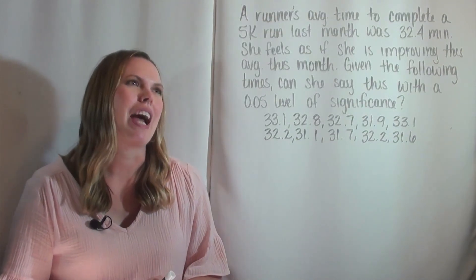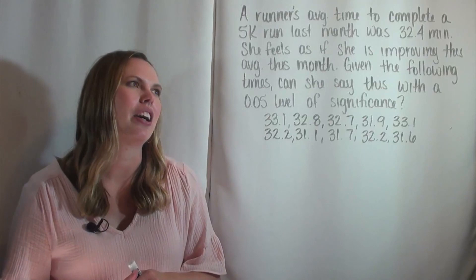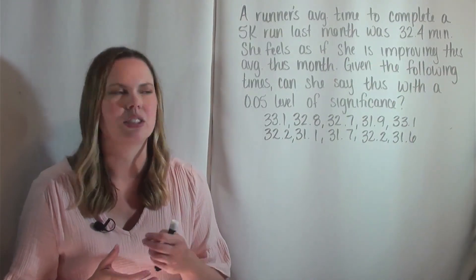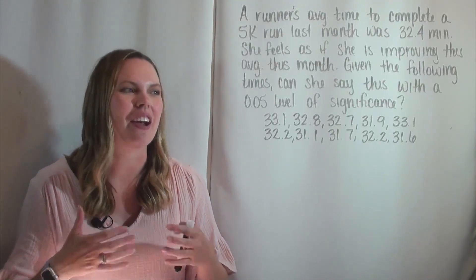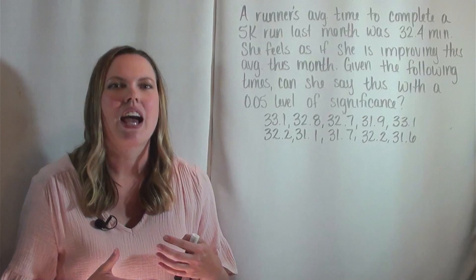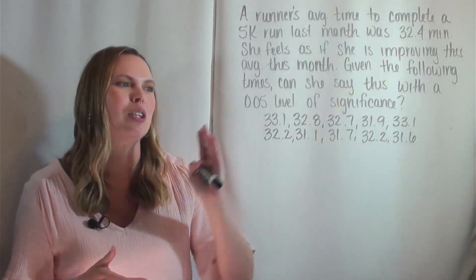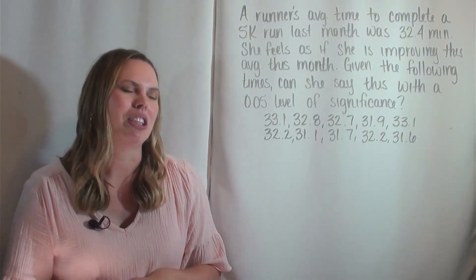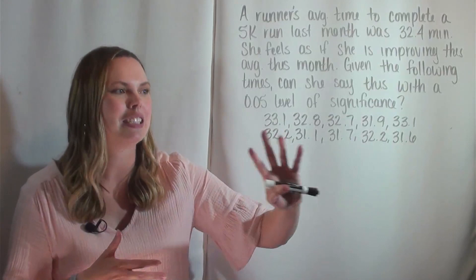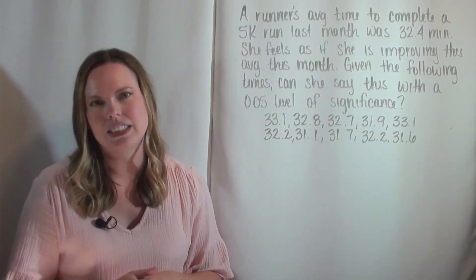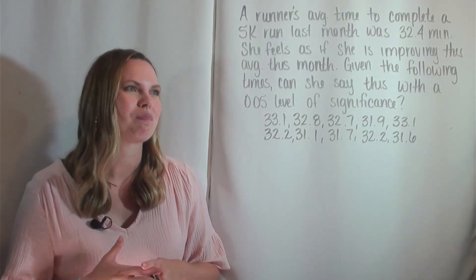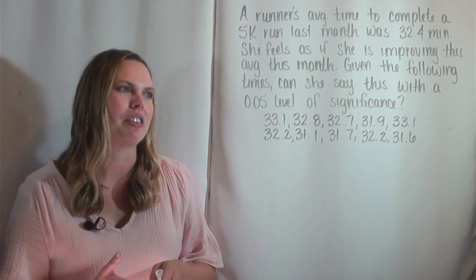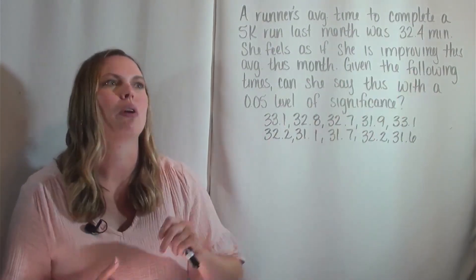Here's our problem: we're looking at a runner's average time. Last month her average time for a 5k was 32.4 minutes. She feels like she's improving this month and that her average is going to get better. She has 10 data points — 10 runs from this month — and she's asking, with a 0.05 level of significance, can we say that she is improving her average?